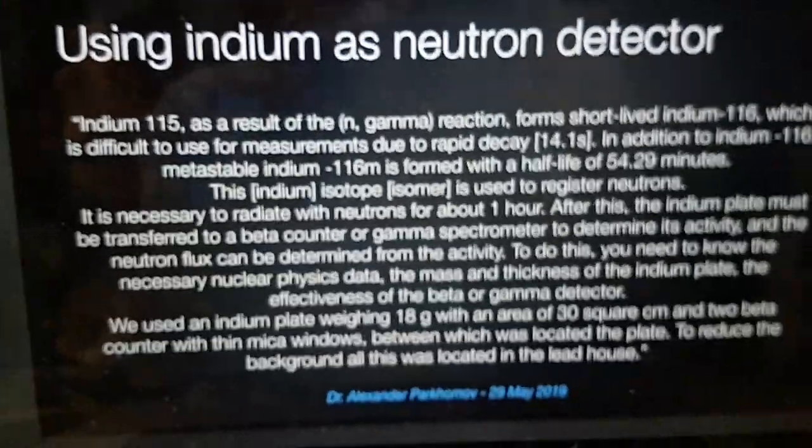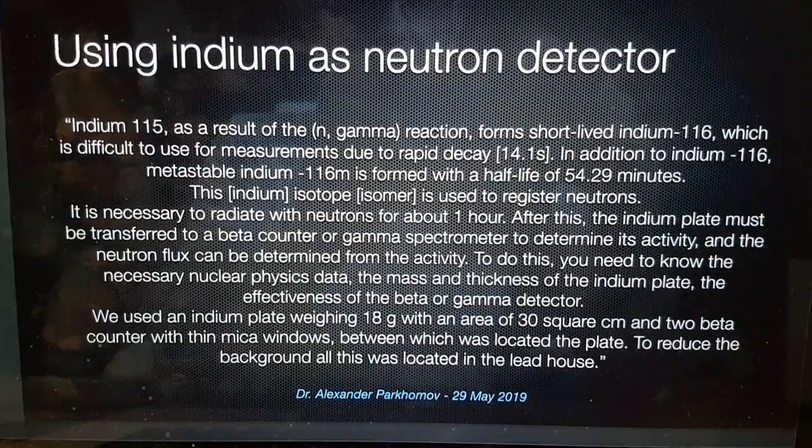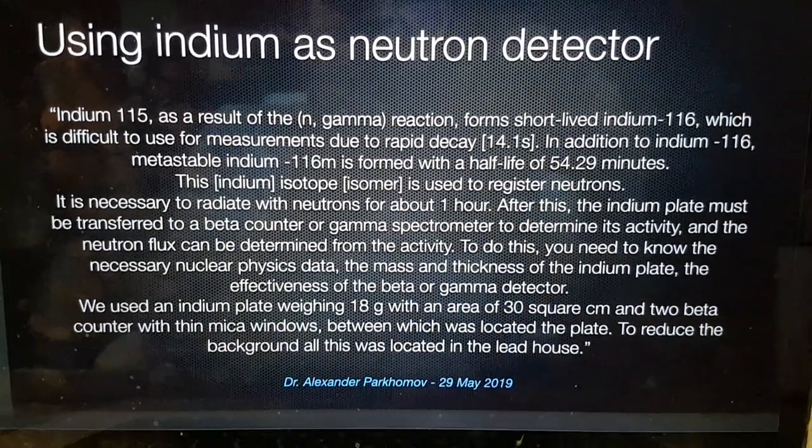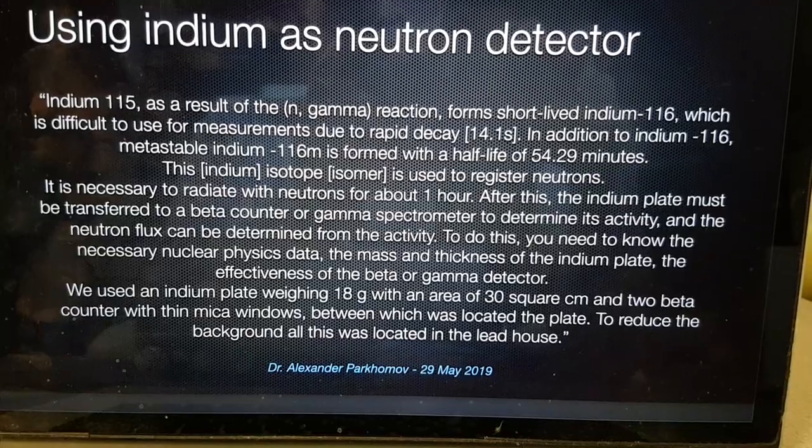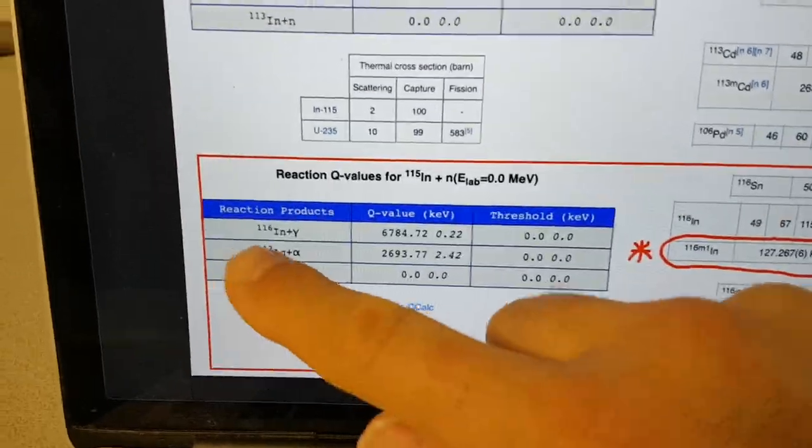And so I asked him the correct way to do this use of indium for neutron detection. And he said, indium-115, as a result of the N-gamma reaction—this is the neutron in and gamma out.